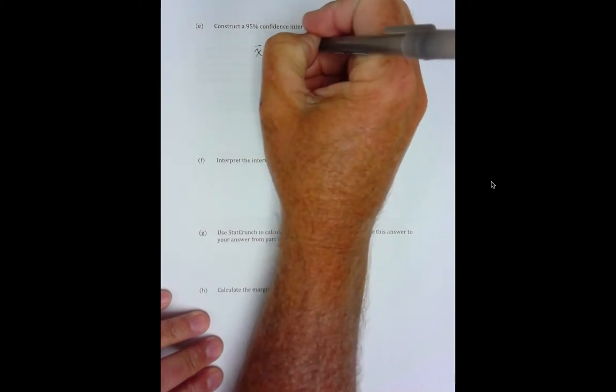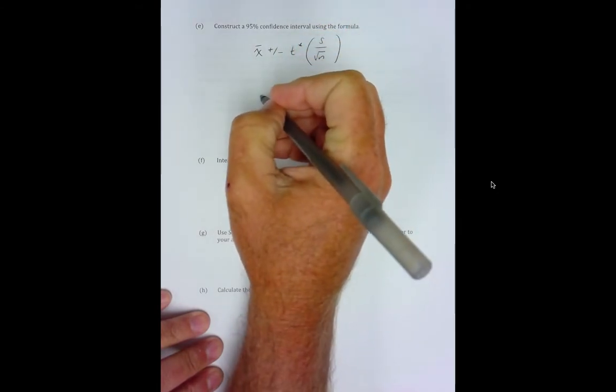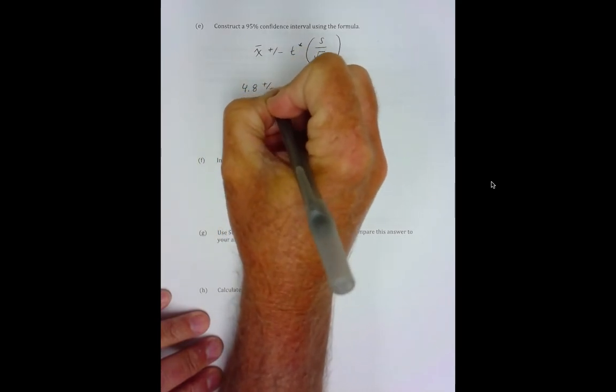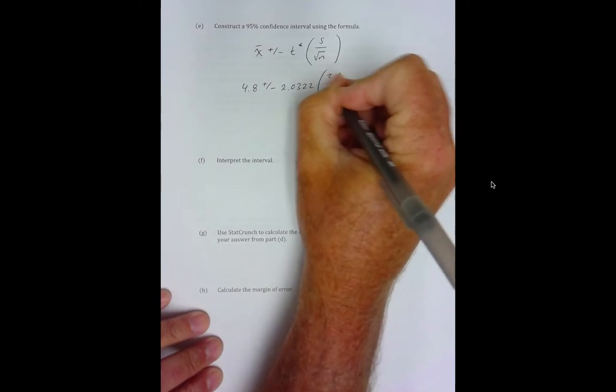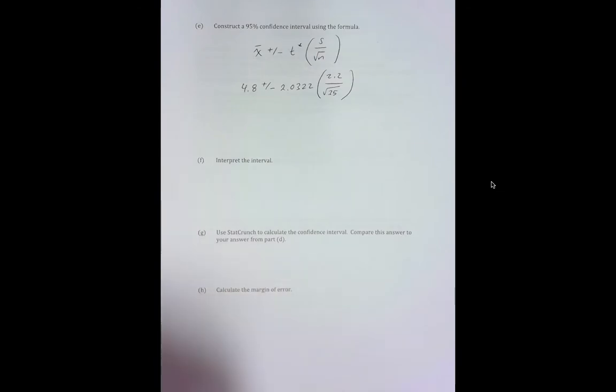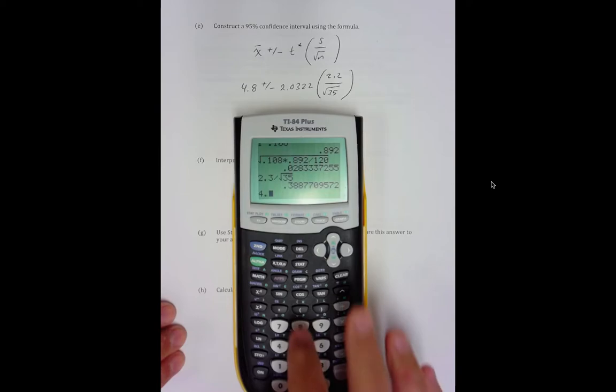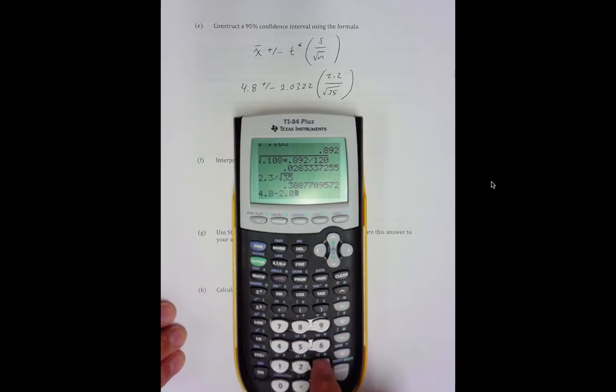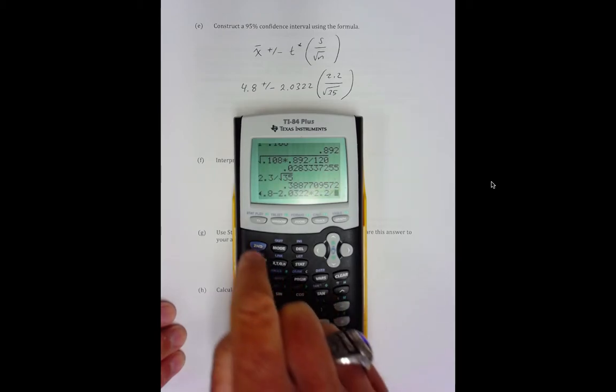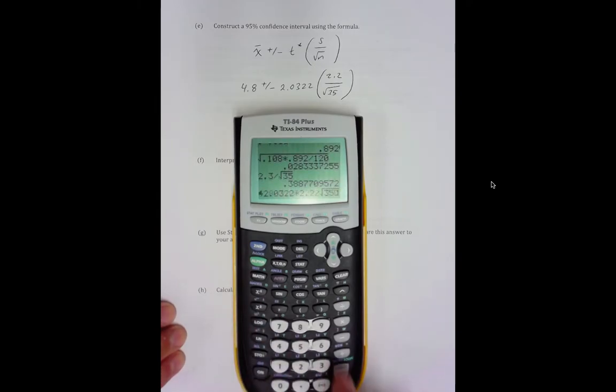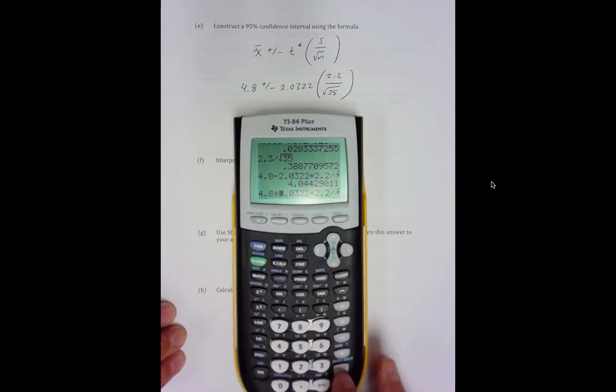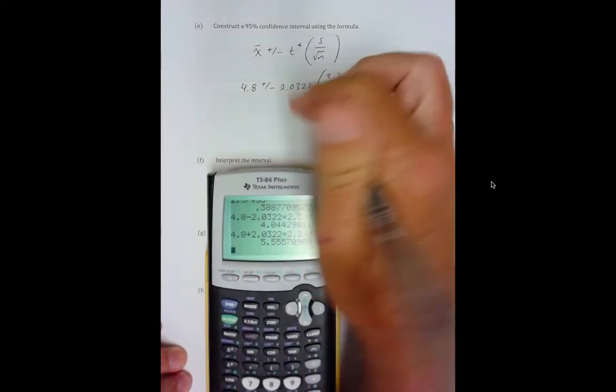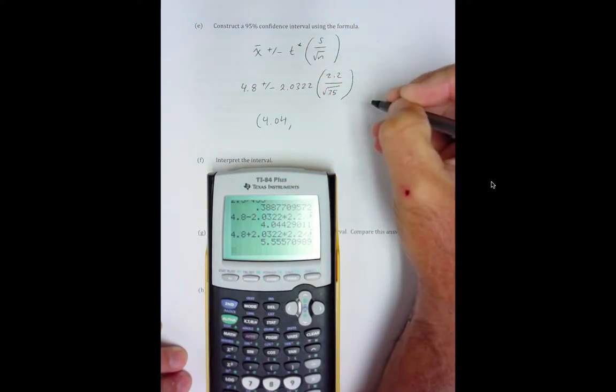Construct a 95% confidence interval using the formula. Remember we take x bar plus or minus t star times the standard deviation over the square root of n. So x bar is 4.8 plus or minus our t star was 2.0322. Our standard deviation was 2.2 and we had a sample size of 35. So grab a calculator. Do the minus first. Do it again, just come over and change the minus to a plus. So we have 4.04 to 5.56.